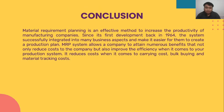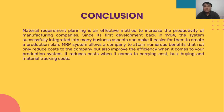Lastly, conclusion. Material requirement planning is an effective method to increase the productivity of manufacturing companies. Since its first development back in 1964, the system has successfully integrated into many business aspects, making it easier to create a production plan. The MRP system allows a company to attain numerous benefits that not only reduce cost to the company, but also improve efficiency when it comes to the production system. It reduces cost when it comes to carrying costs, bulk buying, and material tracking costs.